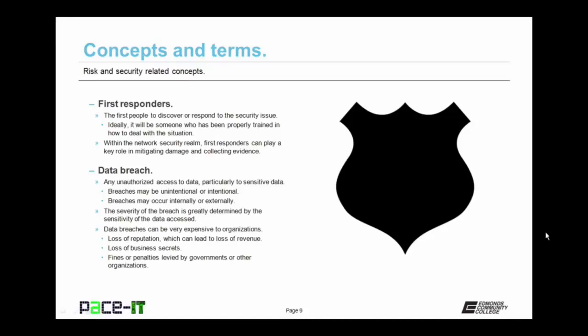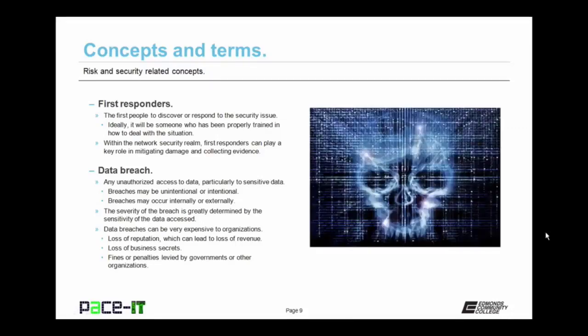First responders are the first people to discover or respond to a security issue. Ideally, it will be someone who has been properly trained in how to deal with the situation. Within the network security realm, first responders can play a key role in mitigating damage and collecting evidence. Then there's the concept of a data breach, which is any unauthorized access to data, particularly sensitive data. Breaches may be unintentional or intentional. They may also occur from inside the network or from an external source.